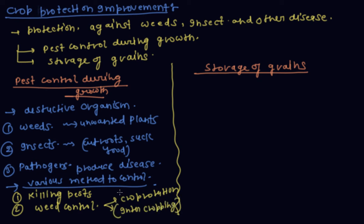These are the methods to control weeds. Now storage of grains: grains need safe storage throughout, but during storage they can be destroyed by various means.